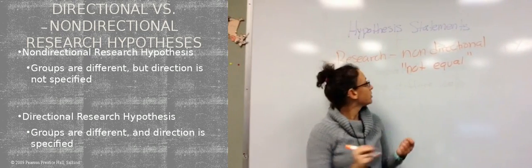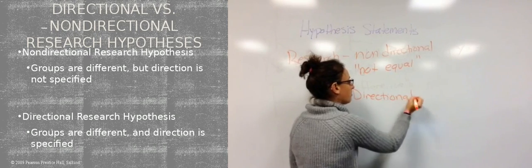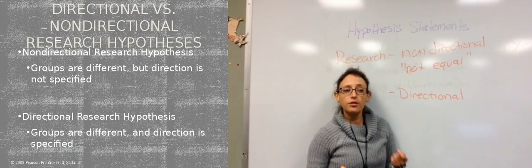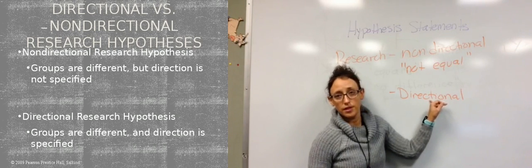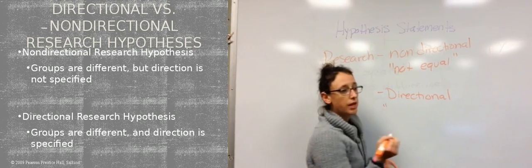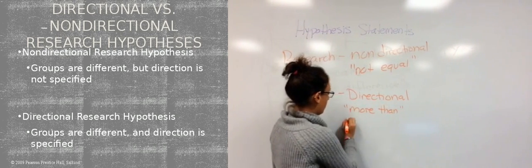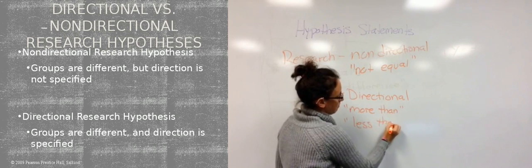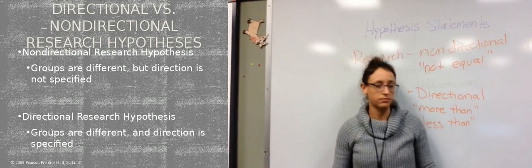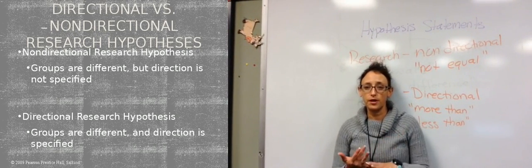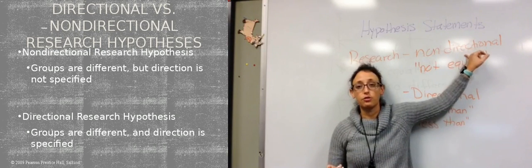With the directional hypothesis statement, we're stating the groups are different and we're also stating a direction. With directional hypothesis statements, you're going to use words like 'more than,' 'less than,' or 'greater than.' So with the directional, the groups are different and we're stating how they're different. With the non-directional, we're simply stating the groups are different.